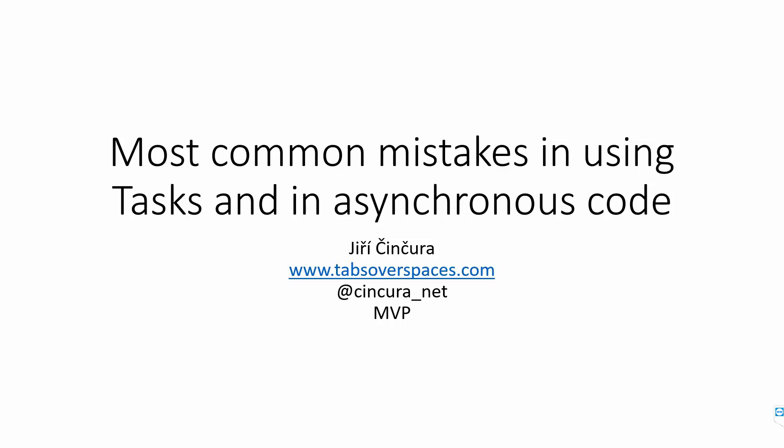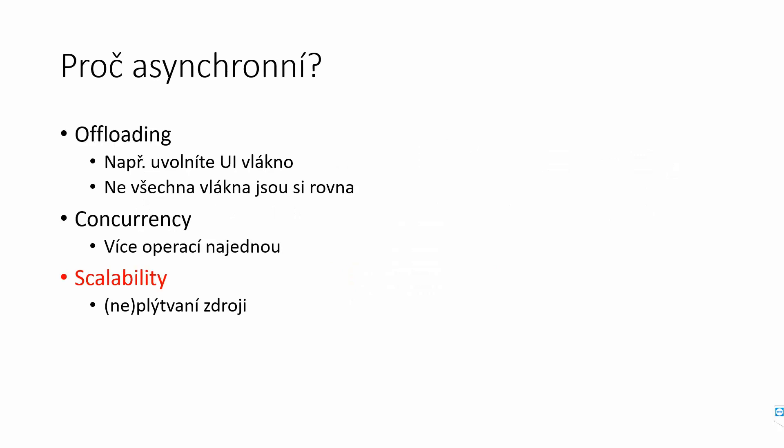Especially in asynchronous code, this can badly affect the scalability or performance of an application. There are two main reasons to use async: first, offloading work to a different thread so your UI thread stays responsive to user clicks. The second is concurrency — if you're not blocking your execution thread, you can do more operations together without starting more threads, because threads are expensive.